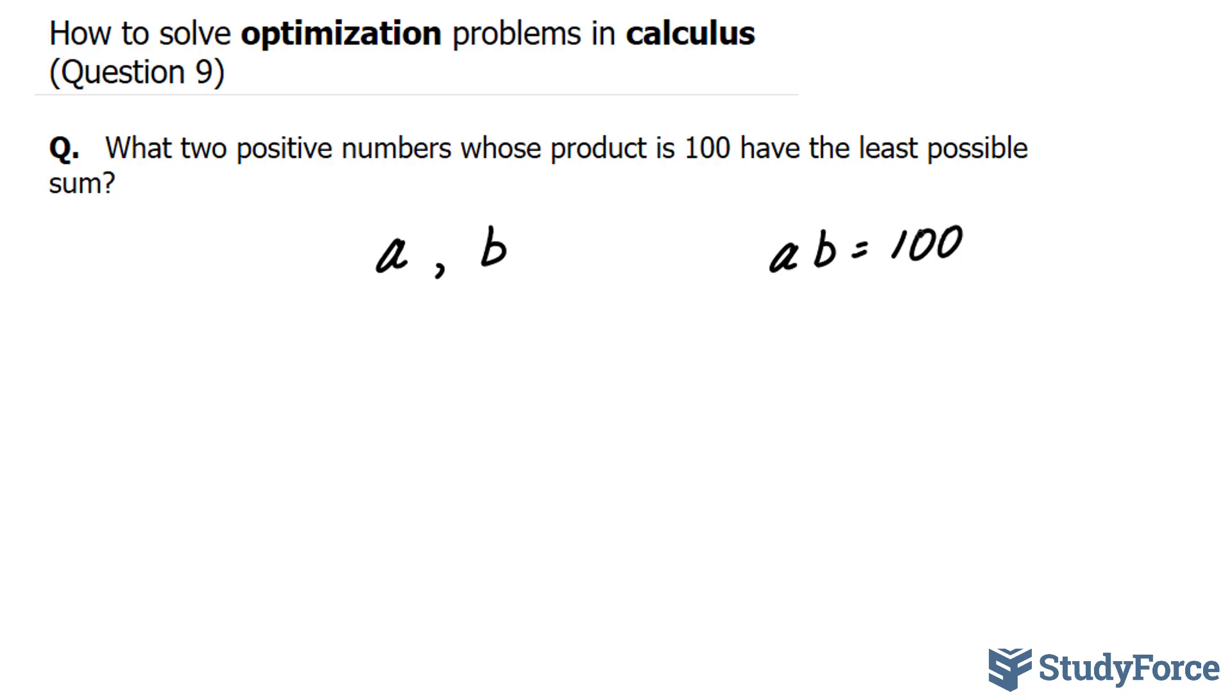And if we add A and B together, we end up with a sum which we want to minimize. So A plus B is equal to a sum, S.